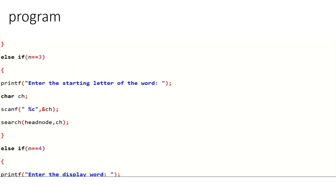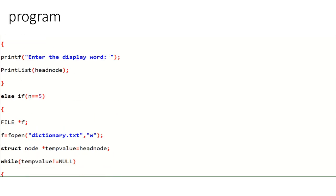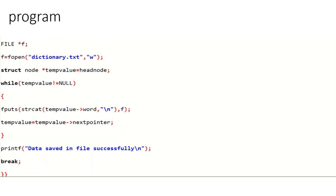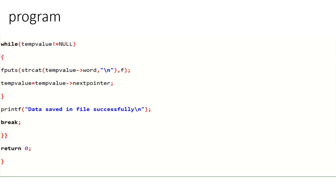Search is called with head node and character ch. If the user enters 4, display is triggered and printlist is called with head node. If the user enters 5, the file is opened with fopen in write mode. A struct node pointer tempo is set to head node. While tempo is not null, fputs writes all words to the file, tempo advances to tempo's next pointer, and it prints 'data saved in file successfully'.